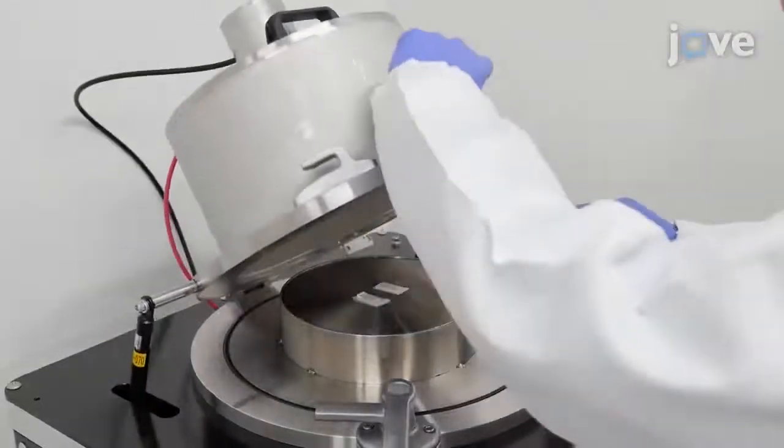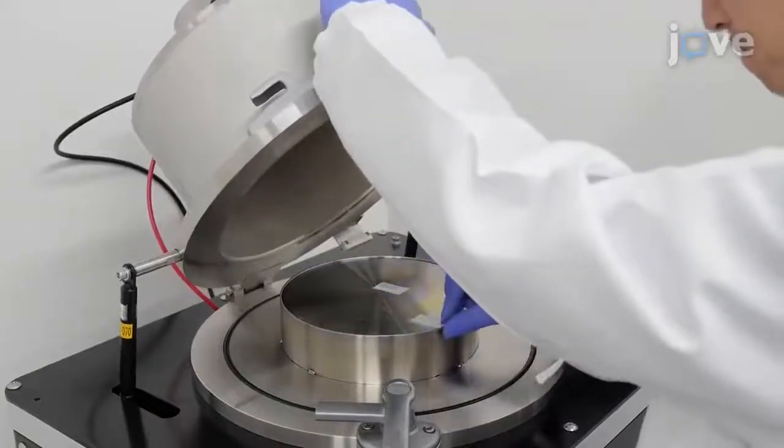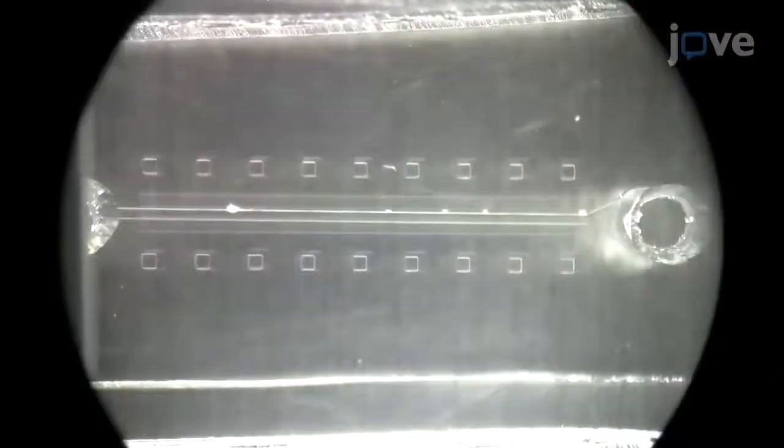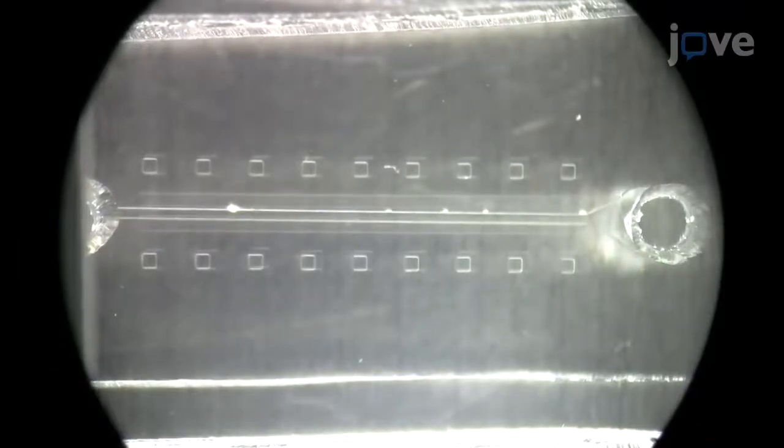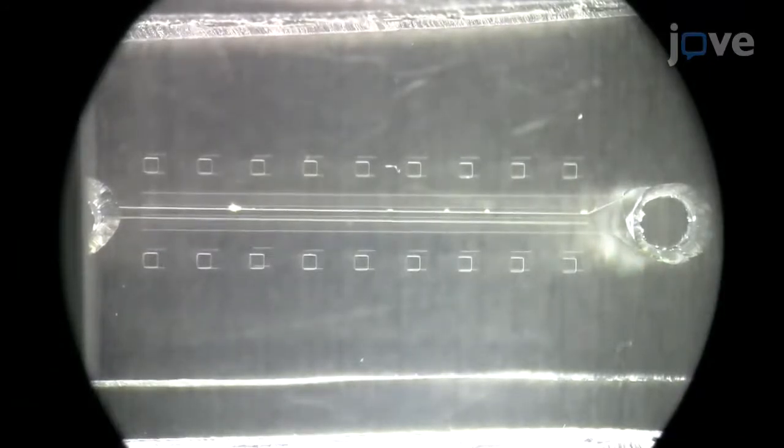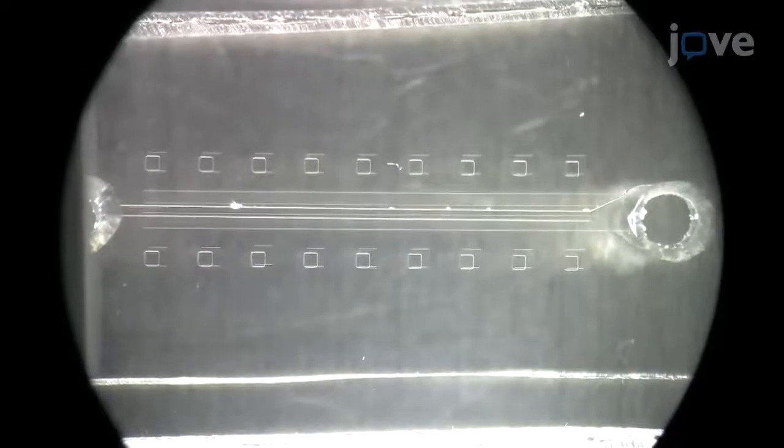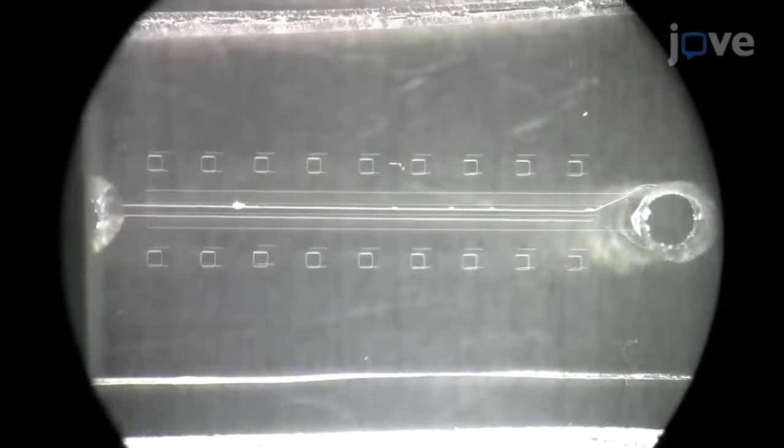After exposing both layers to air plasma for 50 seconds, join them together including a cover slip under a stereo microscope. Use the custom-made aligner tool to accomplish this. Cure the assembly for 30 minutes in the oven to seal off the microfluidic.